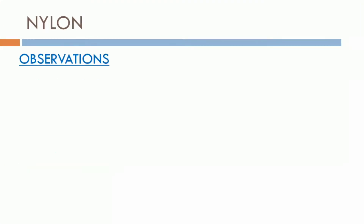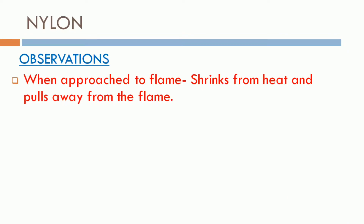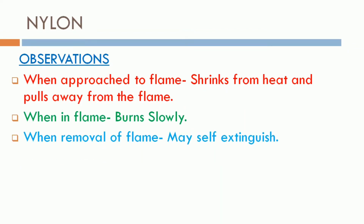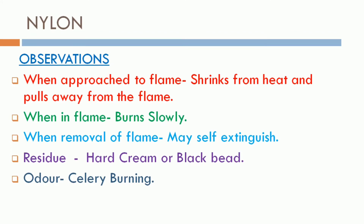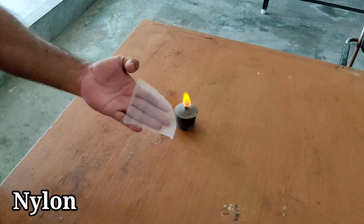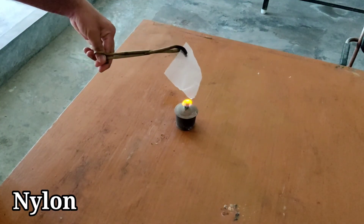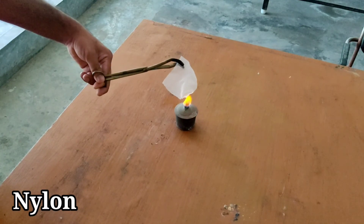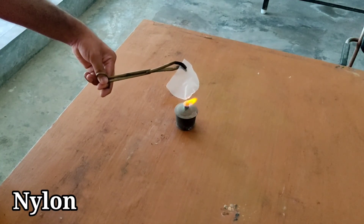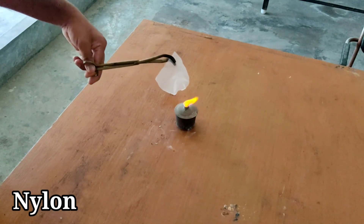Nylon fiber burning observations: when approached to the flame, it shrinks from heat and pulls away from the flame. When in the flame, it burns slowly. When removed from the flame, it may self-extinguish. The residue is a hard cream or black bead. The odor is like celery burning — a vegetable burning smell. Demonstrating with nylon fabric: it initially shrinks and pulls away from the flame.